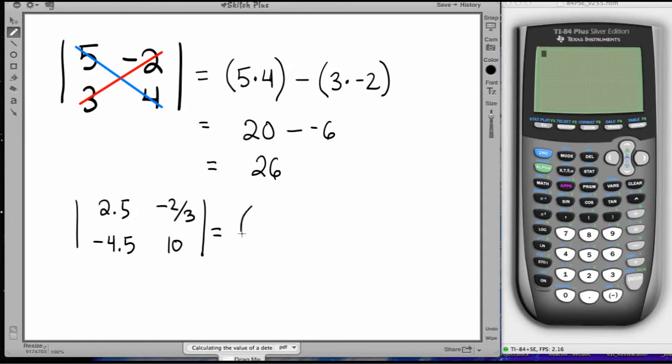So what you do is you take the product of the forward diagonal, 2.5 times 10 in this case, minus the product of the reverse diagonal, negative 4.5 times negative 2 thirds. Now since the numbers are a little bit harder this time, might as well use the calculator. So start off with parentheses and then 2.5 times 10, end parentheses minus new parentheses, negative 4.5 times, and just for the ease of your mind, maybe put the negative 2 thirds.